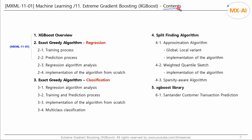Let's take a look at the full table of contents. Chapter 1 provides an overview of XGBoost. In Chapters 2 and 3, we will look at the exact greedy algorithm — Chapter 2 covers regression and Chapter 3 covers classification.